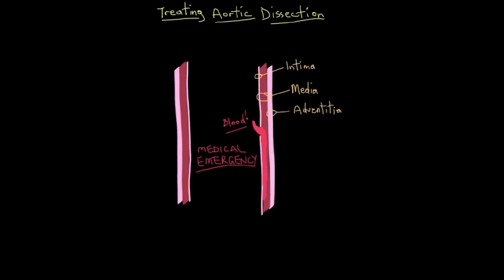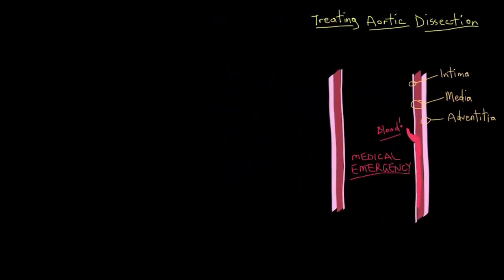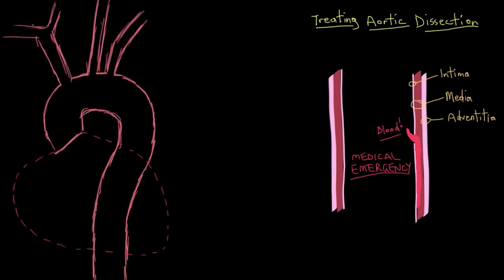This treatment will depend on whether the patient has a type A or a type B tear. Let's take a close-up look at an aortic arch. Type A dissections are, unfortunately, both the more common and the more dangerous type. These dissections are ones where you get a tear in the ascending part of the aorta, or really any part of the first bit of the aorta before the start of the left subclavian artery.